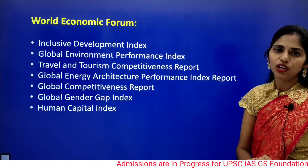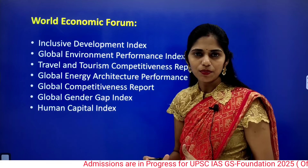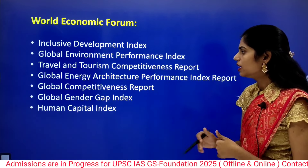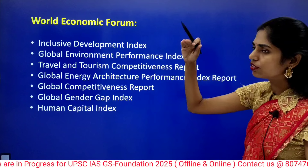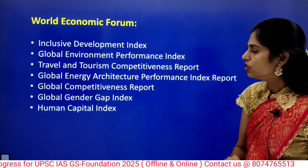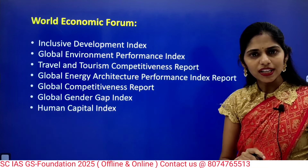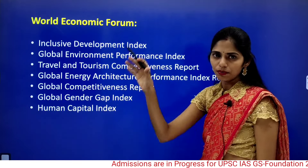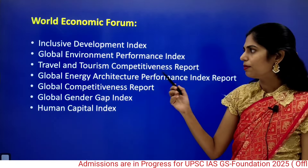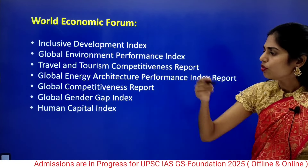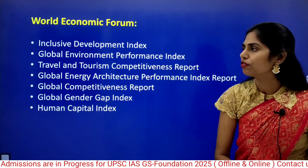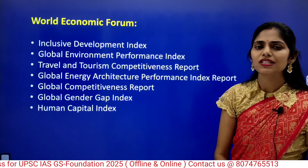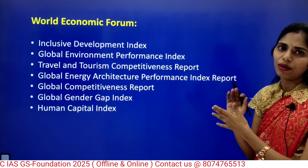First, let us see about the World Economic Forum. World Economic Forum is very important and it releases around 7 reports. For example, you can get a question like: 'Global Competitive Index is published by which organization?' So this World Competitiveness Index report is released by World Economic Forum. You need to know which reports are released by which organization to avoid missing such questions.